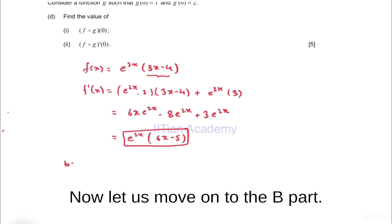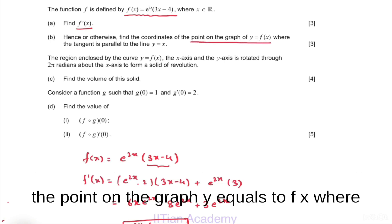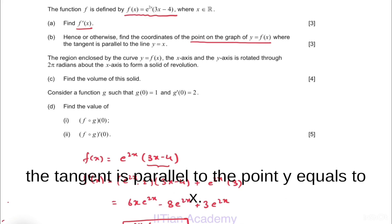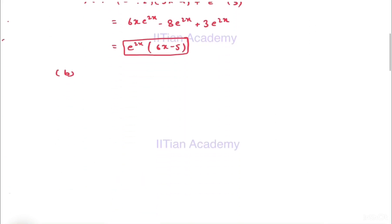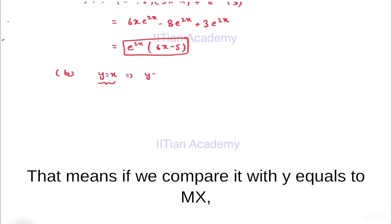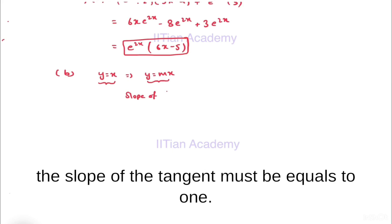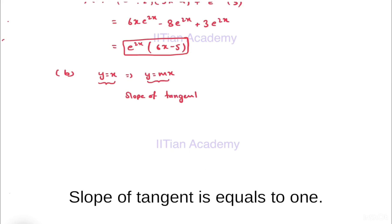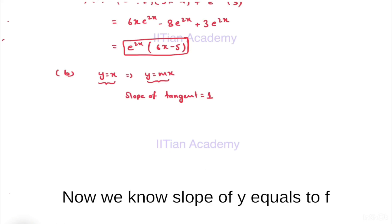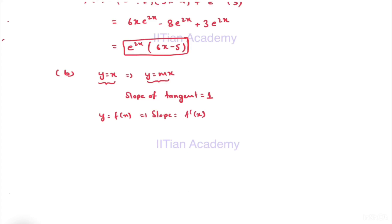Now let us move on to Part (b). In Part (b) we have to find the coordinates of the point on the graph y = f(x) where the tangent is parallel to the line y = x. The tangent is parallel to y = x, which means comparing it with y = mx, the slope of the tangent must be equal to 1.